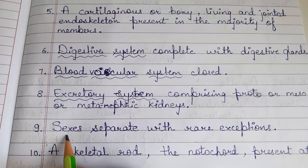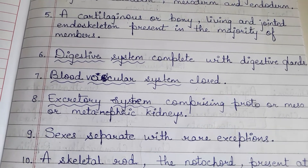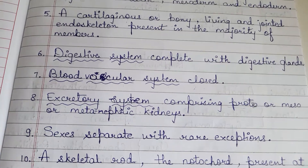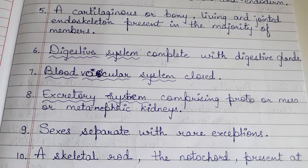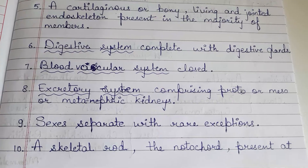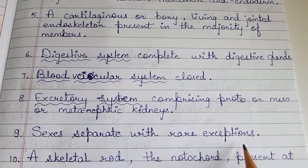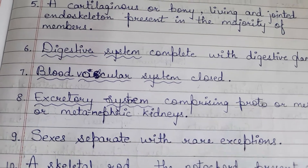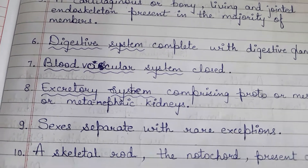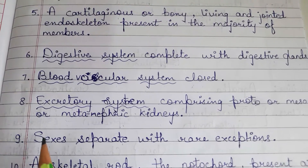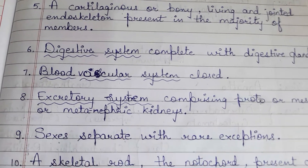Sexes are separate with rare exceptions. Male and female — the reproductive structures and organisms — are different and not similar to each other. Mostly — 99.99% of the time — sexes are separated, with only very rare exceptions.